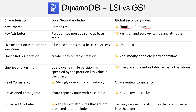For key attributes, with LSI the partition key must be the same as the base table, because it's local — it has to use the same partition key. For GSIs, the partition and sort key can be any attribute you like.